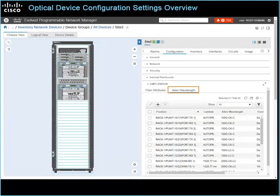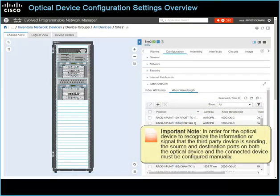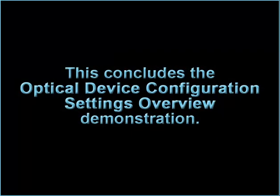On the Alien Wavelengths tab, you can indicate the transmitter characteristics of external transponders that are connecting to the device's source and destination ports. It is important to note that in order for the optical device to recognize the information or signal that the third-party device is sending, the source and destination ports on both the optical device and the connected device must be configured manually. For detailed information on all of the optical device configuration settings, refer to the Configuring Optical Devices by Using the Chassis View job aid.